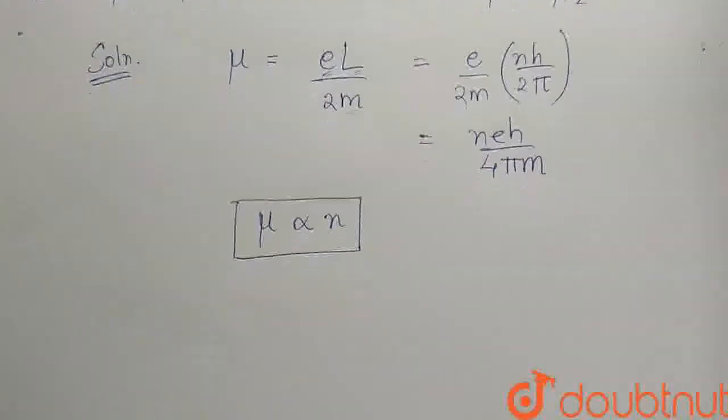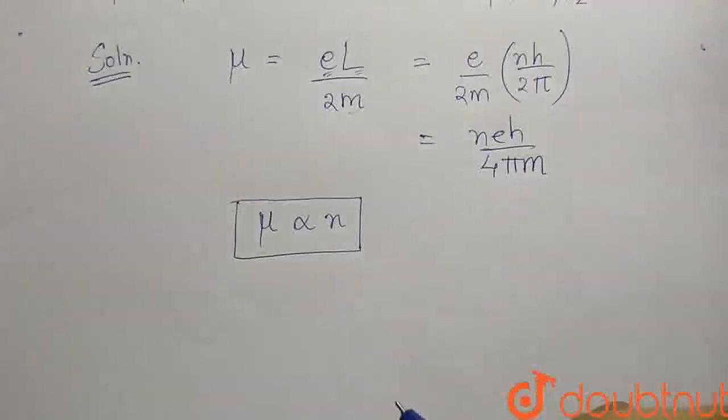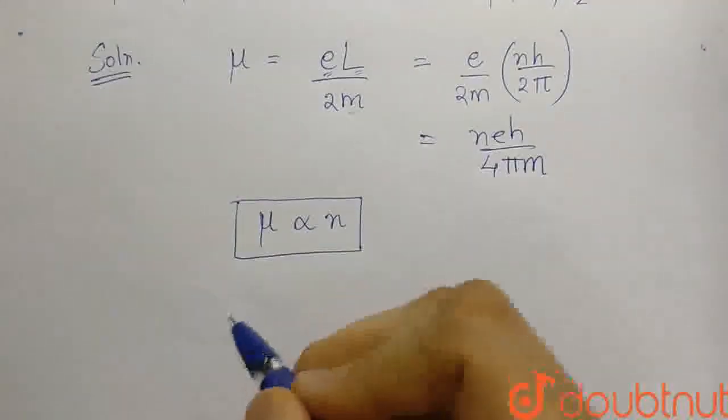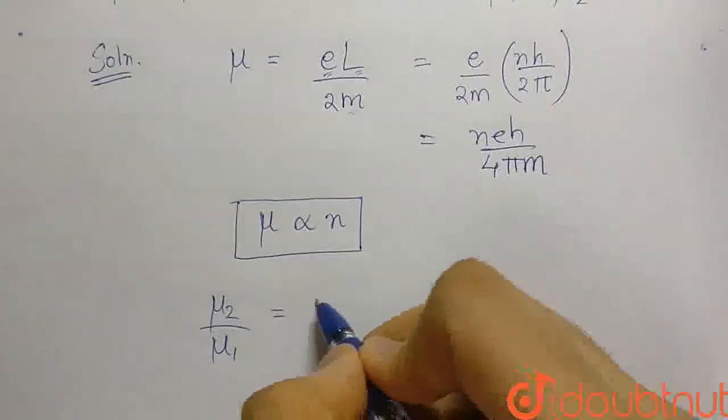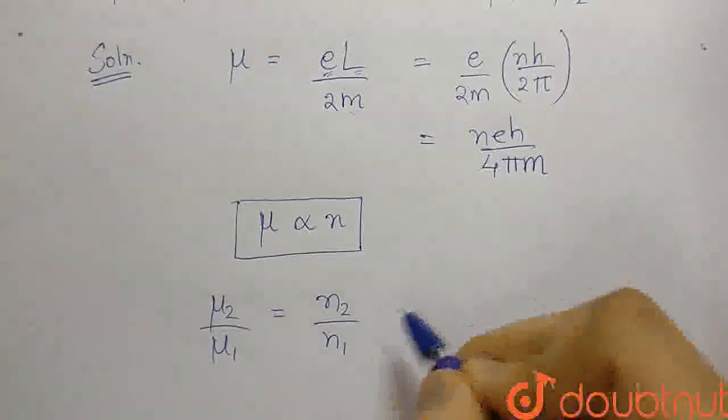Which means when we find the relation between mu2 and mu1, mu2 by mu1 will be n2 by n1.